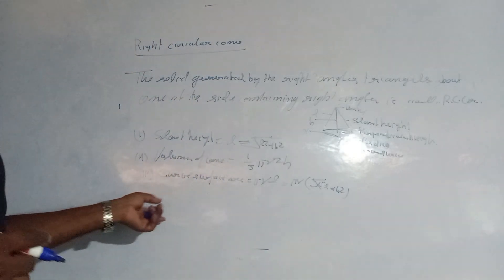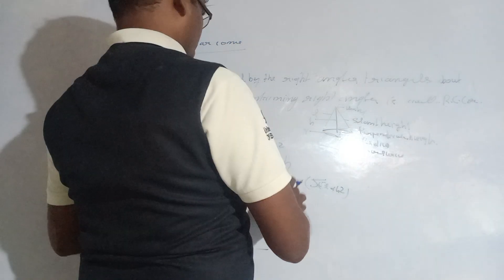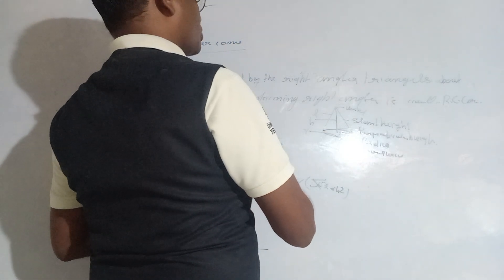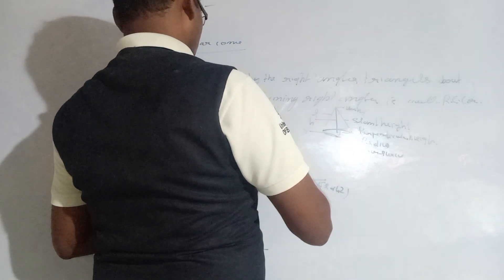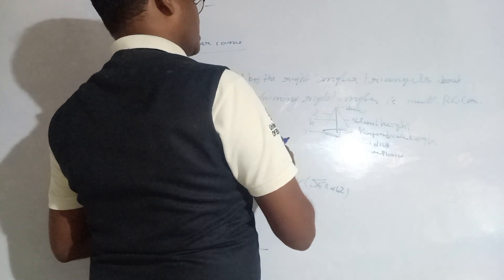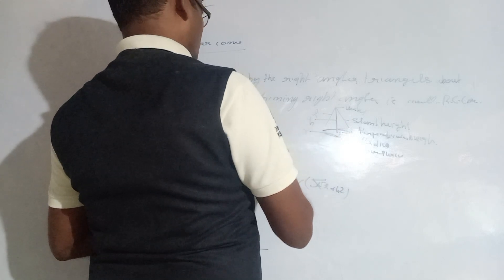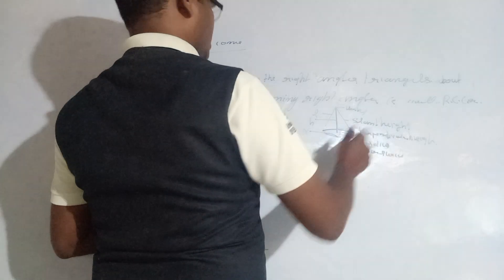The slant height is L, and we have r² as the base area, so what we have here is the area of the base is πr².